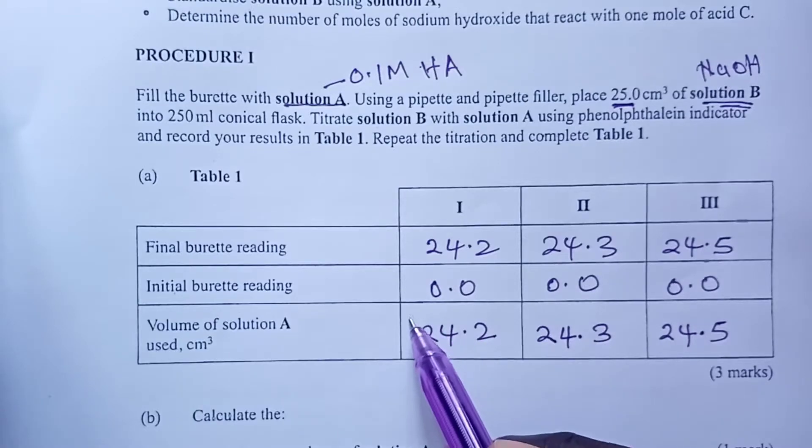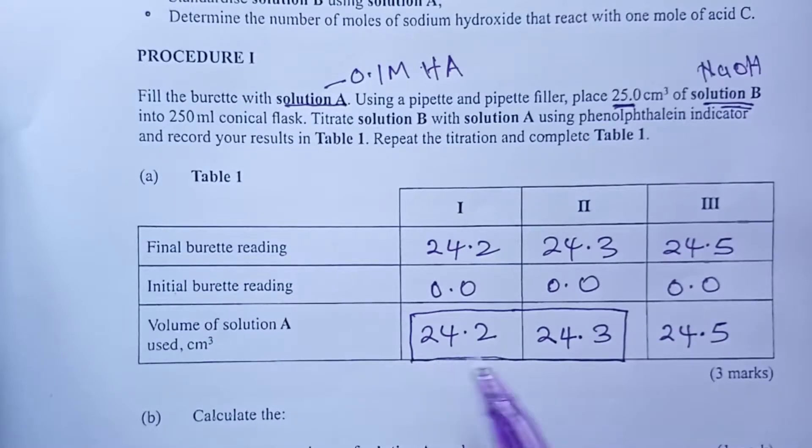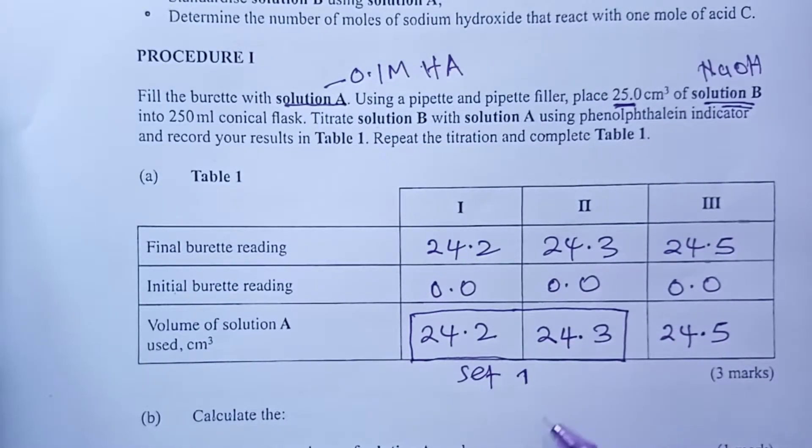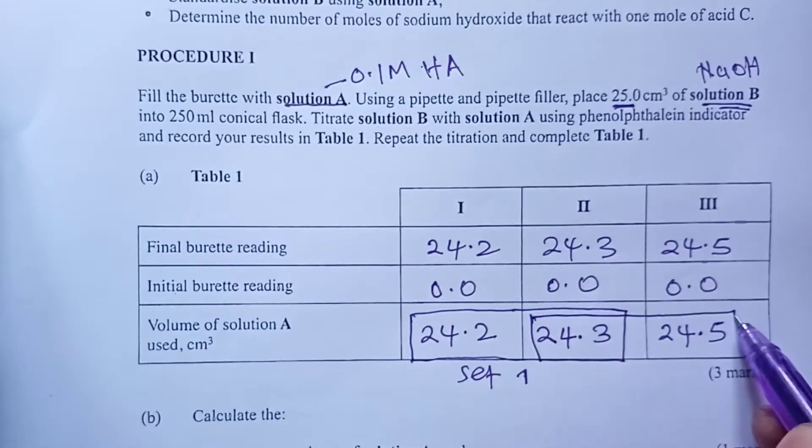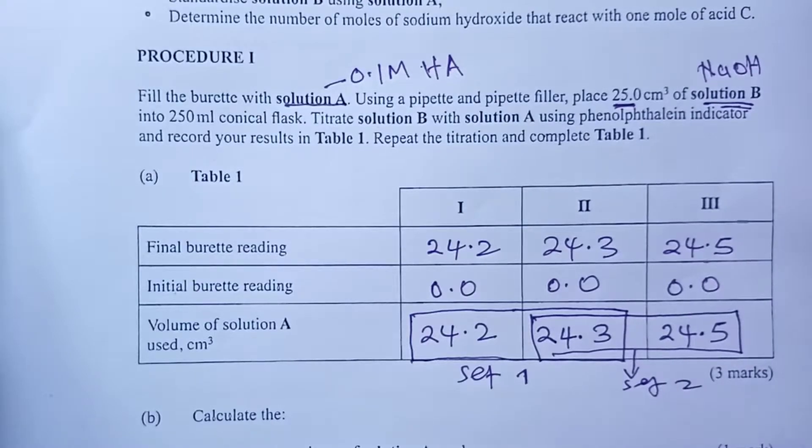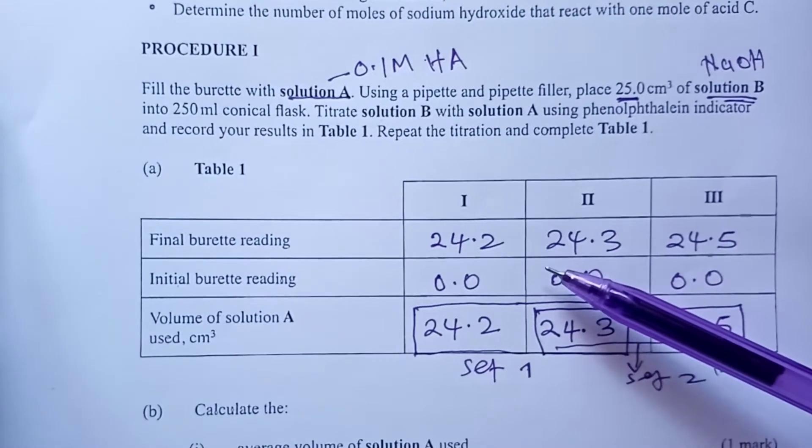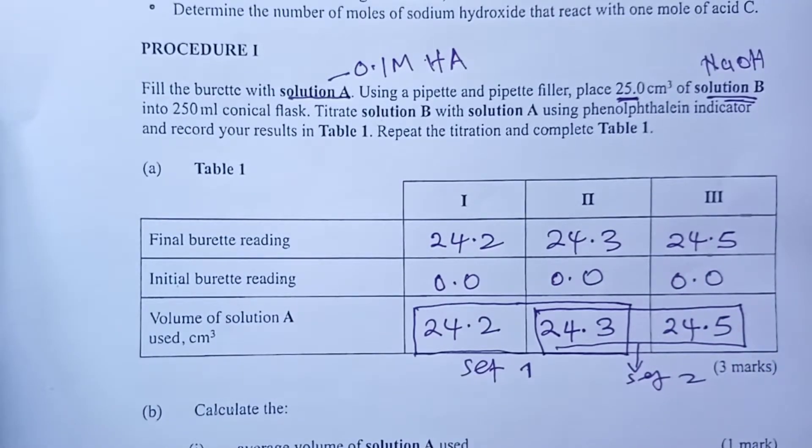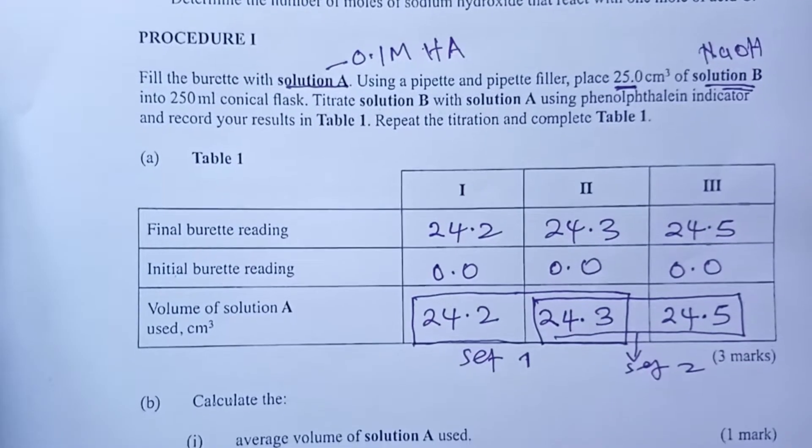So as usual, we have always advised that any time you are doing a titration experiment, make sure you have two sets of values or two sets of volumes that can be averaged. So for our case, the first two is our set one and then the last two is our set two. So you only use one set when you are doing the average. So let's have a look at the questions. I believe we have a clearer understanding of how this table is usually marked. And as we always do, we shall once again share a link to the video we did earlier that explained very well how the table is awarded marks.